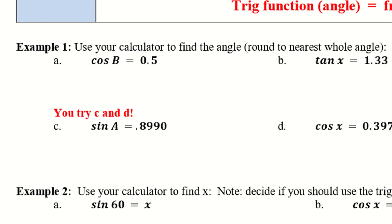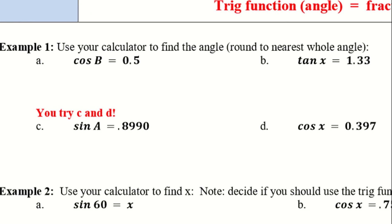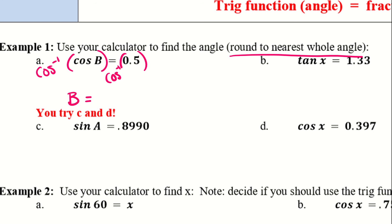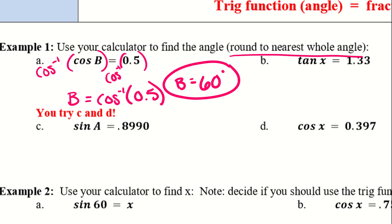Let's try a couple of examples, rounding to the nearest whole angle. Example a: we have cosine of b equals 0.5. I'm going to multiply each side by the inverse of cosine. That gives us b equals cosine to the power of negative 1 times 0.5. We plug that into the calculator exactly as we see it, and I get b equals 60 degrees.